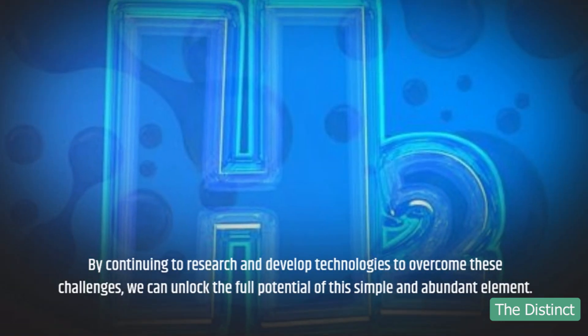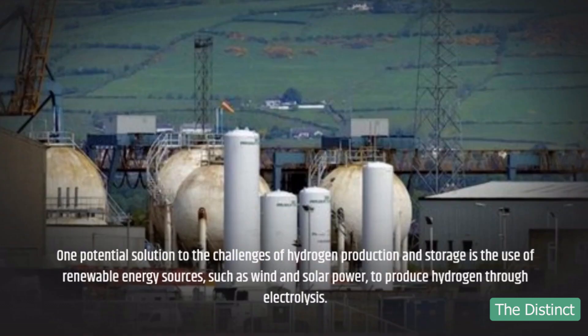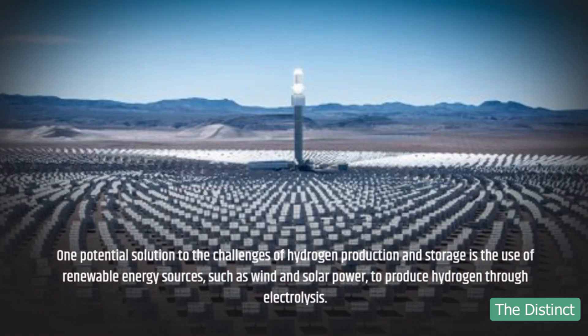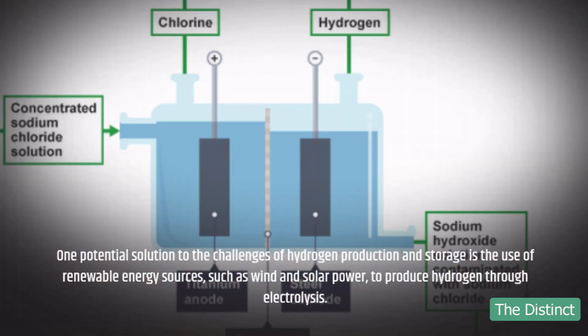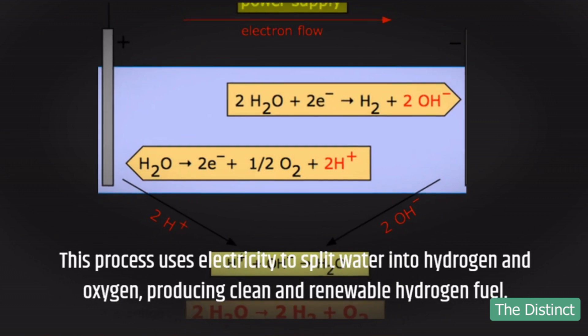One potential solution to the challenges of hydrogen production and storage is the use of renewable energy sources, such as wind and solar power, to produce hydrogen through electrolysis. This process uses electricity to split water into hydrogen and oxygen, producing clean and renewable hydrogen fuel.